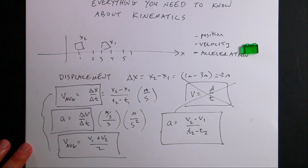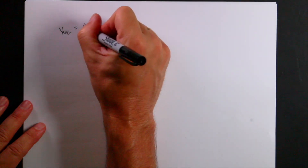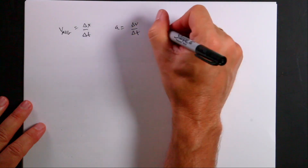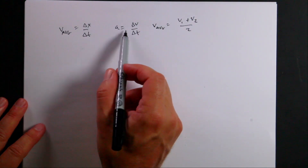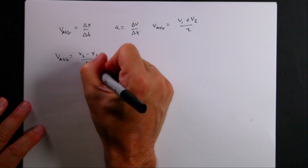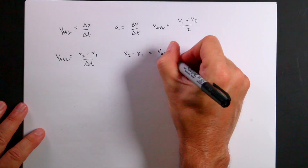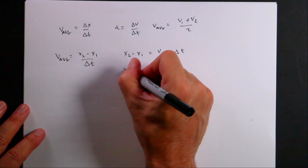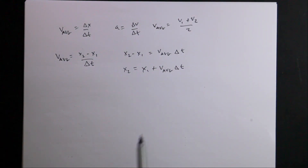Let's use all three of these and develop the kinematic equations. V average equals delta X over delta T; A equals delta V over delta T; and V average equals V1 plus V2 over 2. I'll write V average as X2 minus X1 over delta T, then multiply both sides by delta T to get X2 minus X1 equals V average times delta T. Adding X1 to both sides gives X2 equals X1 plus V average times delta T.